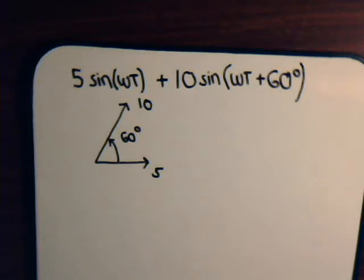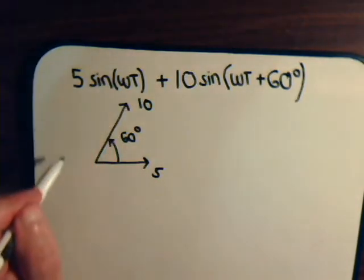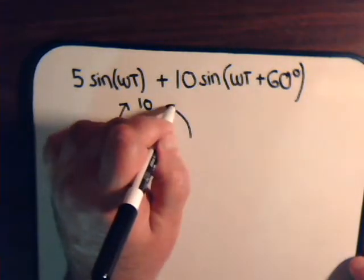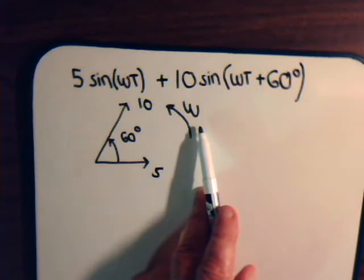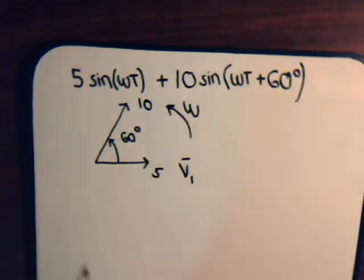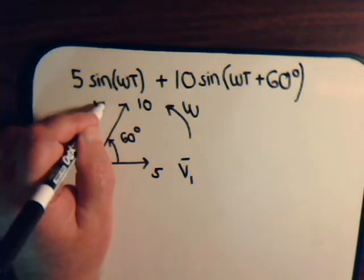You can imagine each one of these rotating counter-clockwise in their respective circles. This first one would be rotating counter-clockwise in a circle of radius 5, and the second would be rotating counter-clockwise in a circle of radius 10, both going around with the same angular velocity omega — measured in radians per second. Now what we want to do is add these two phasors together, which is the same as adding vectors. We'll call the first vector V1, and the vector with magnitude 10 at an angle of 60 degrees we'll call V2.